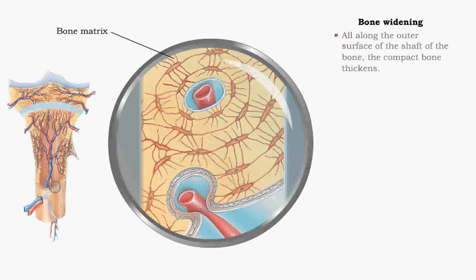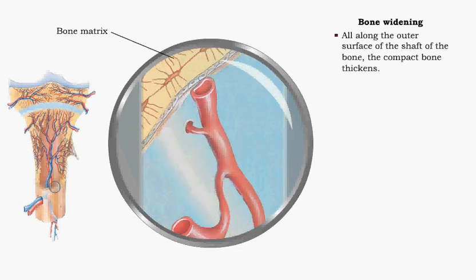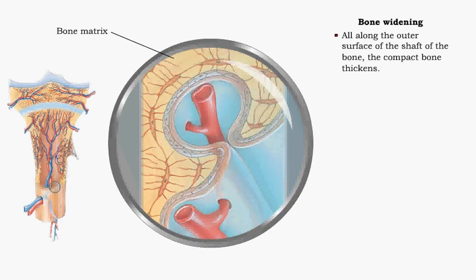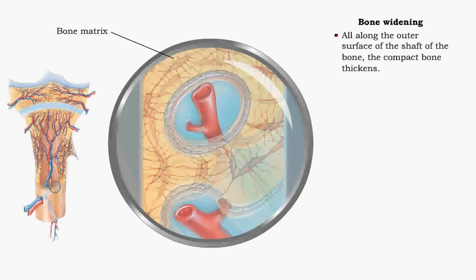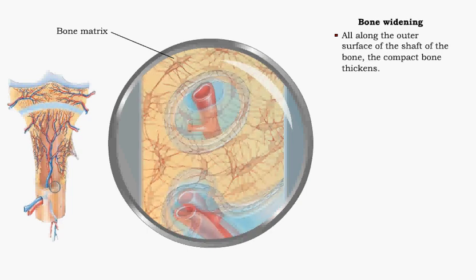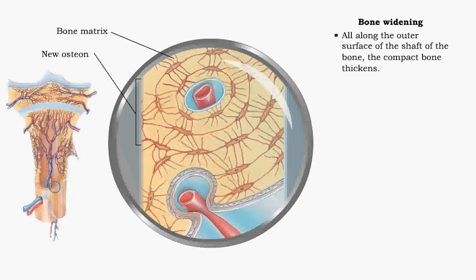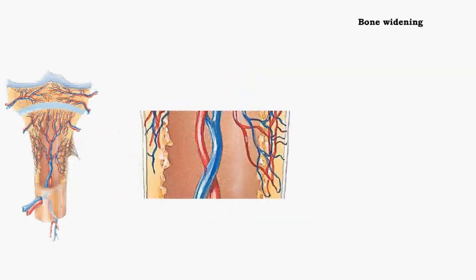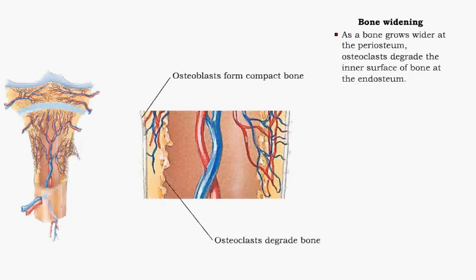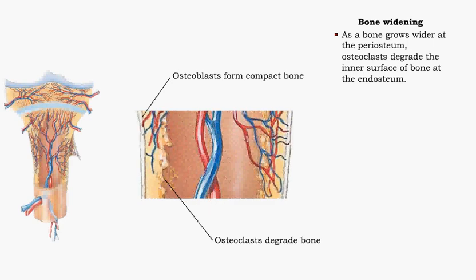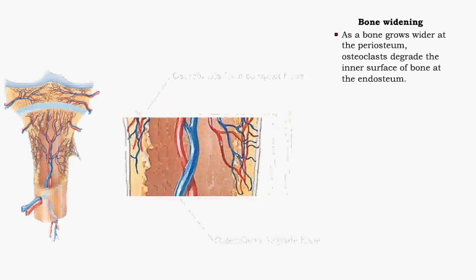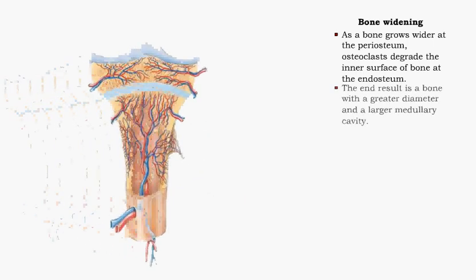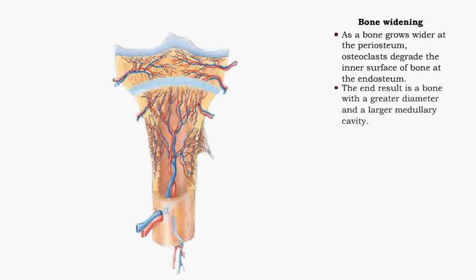As new osteons and outer circumferential lamellae are formed, the compact bone slowly grows outward in diameter. While deposition occurs at the outer surface of compact bone, osteoclasts degrade bone on the inner surface. As bone grows in diameter, its medullary cavity enlarges.